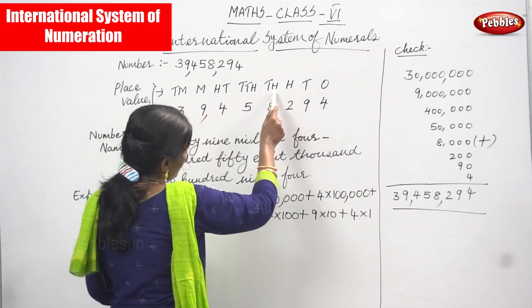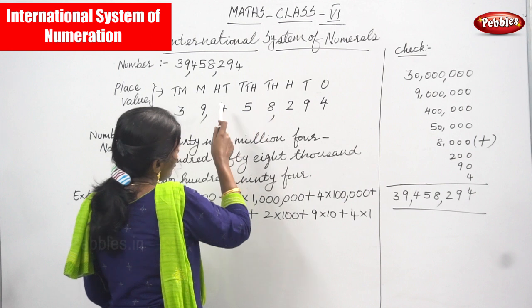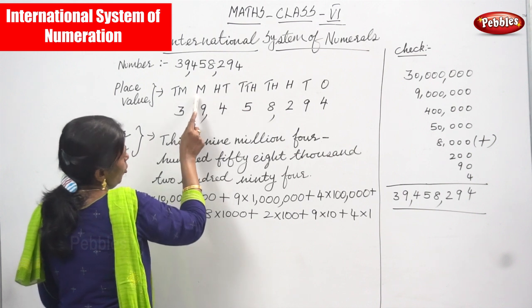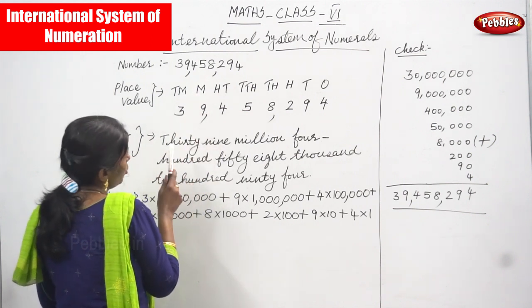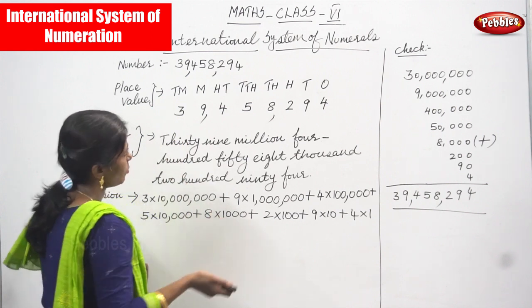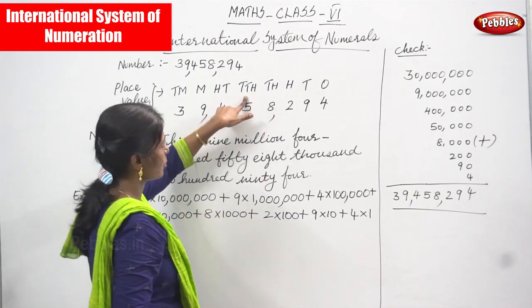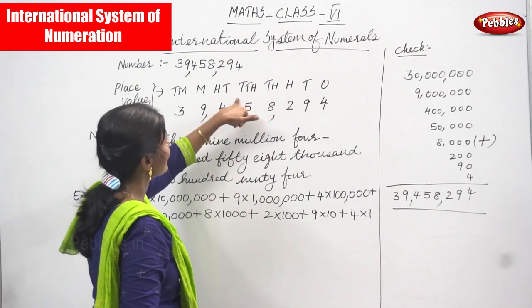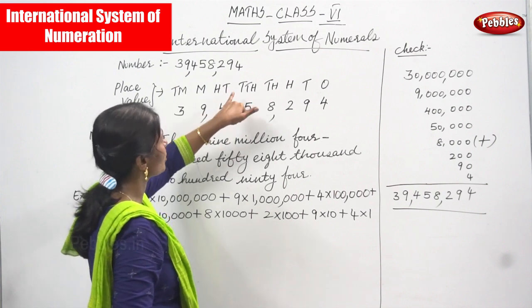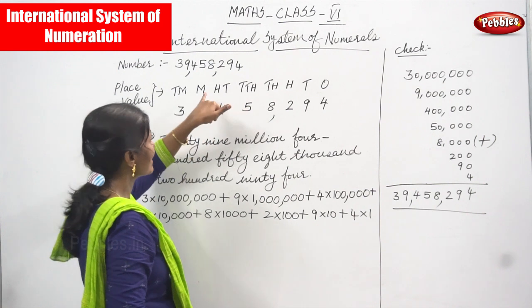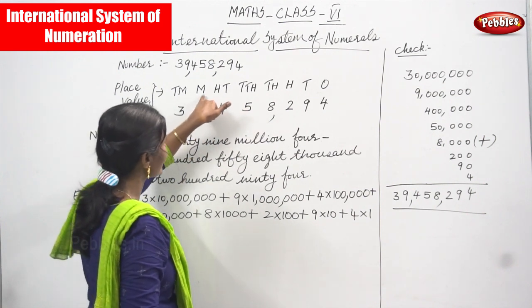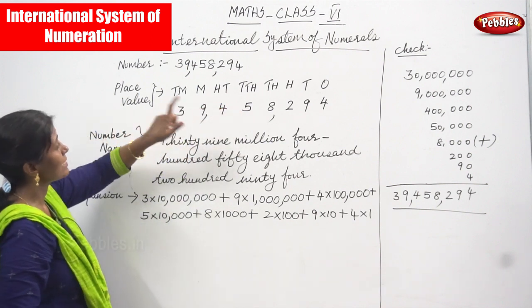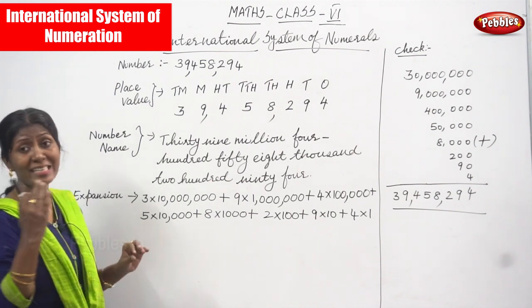Generally in the Indian system, after ten thousands comes lakh. Here instead of lakh we use hundred thousand, and instead of ten lakh we use million. After ten lakh comes crore, and instead of crore we use ten million. So up to ten thousand, both Indian and International systems are similar. After that, lakh becomes hundred thousand, ten lakh becomes million, and crore becomes ten million. That is the difference between the Indian system and the International system.